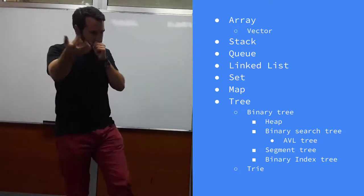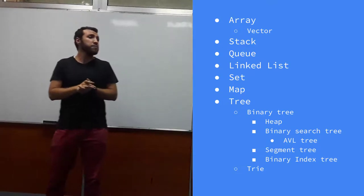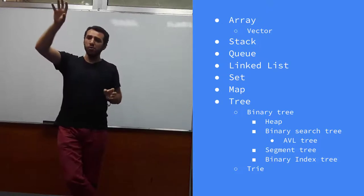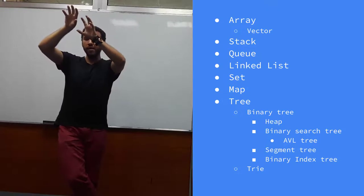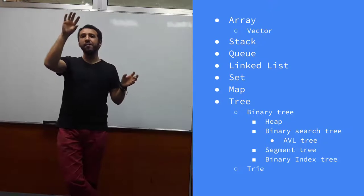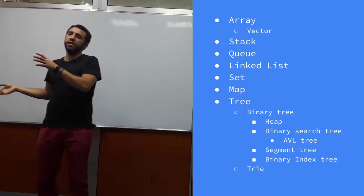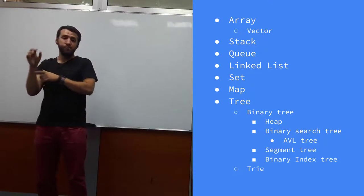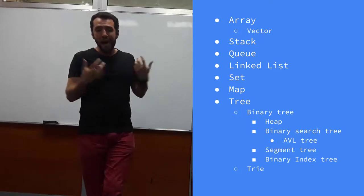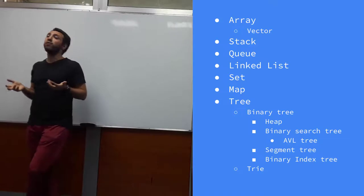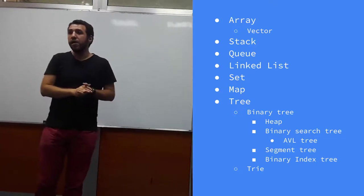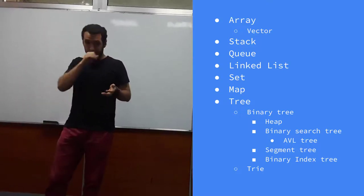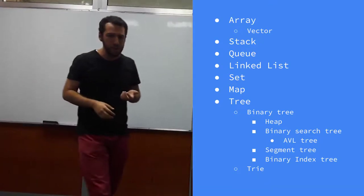In a binary search tree, every node has a greater value than all nodes in its left subtree and a smaller value than all nodes in its right subtree. So whenever we are on a node, depending on the value we are looking for, we know which direction to go. We also have AVL trees because binary search trees might not always be balanced — depending on how we insert elements, we may end up with something like a linked list, which forces linear search instead of logarithmic search.